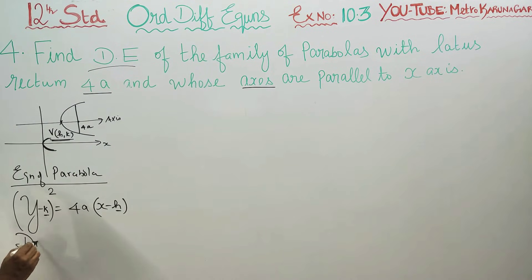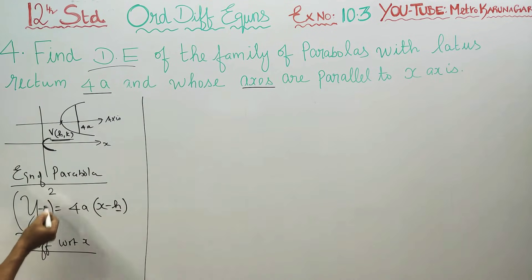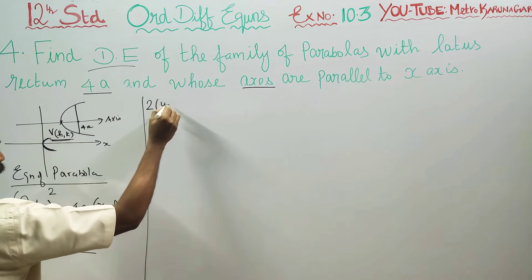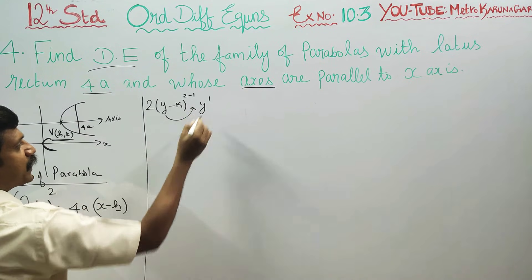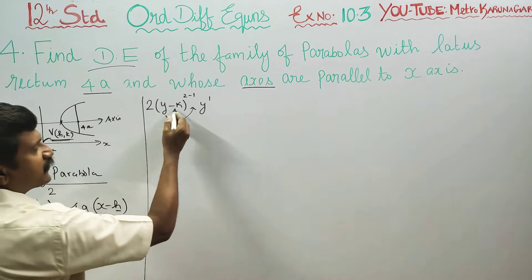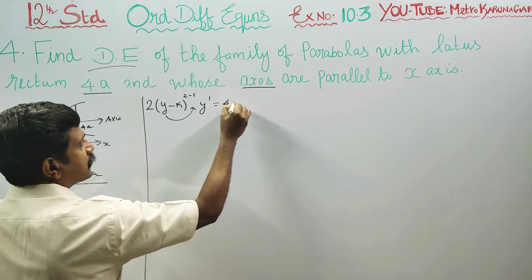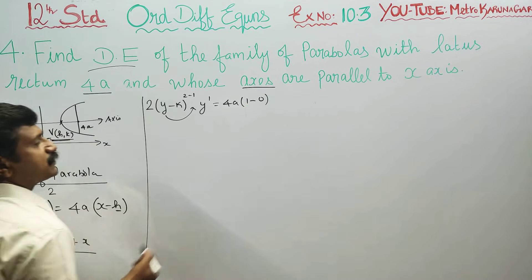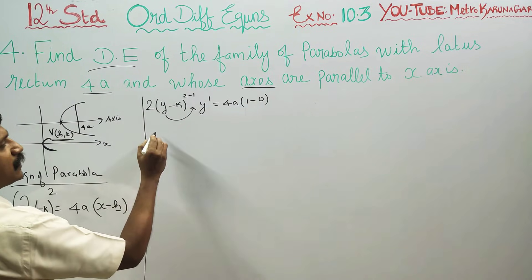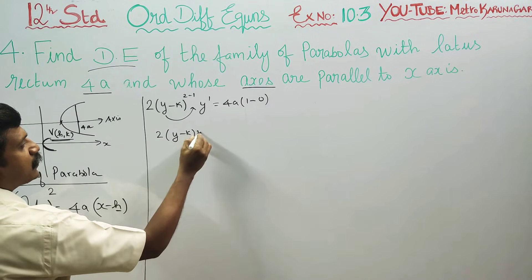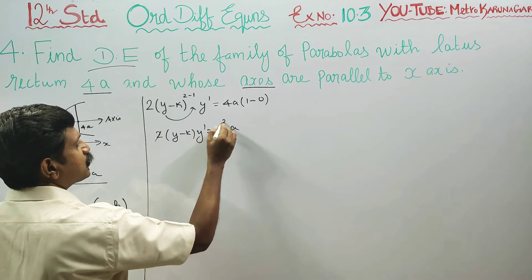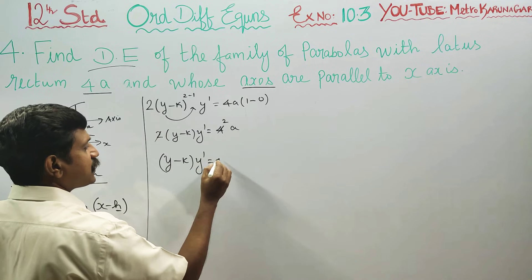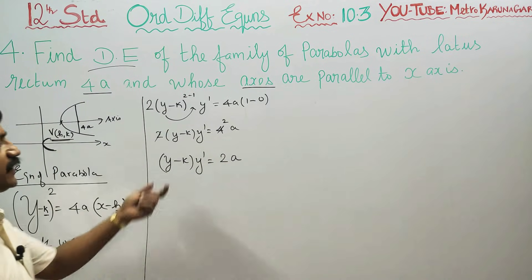I am going to differentiate with respect to x. Using the power rule: 2 times (y minus k) to the power 2 minus 1, multiplied by y-dash (dy/dx). So (y minus k) times y-dash is equal to 2a.